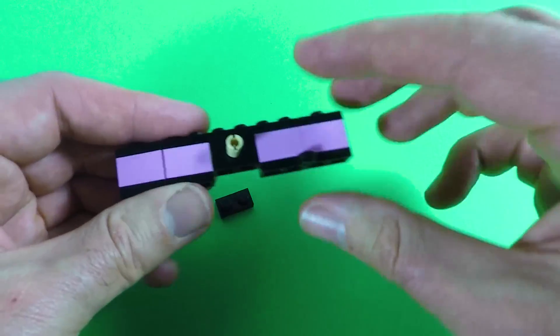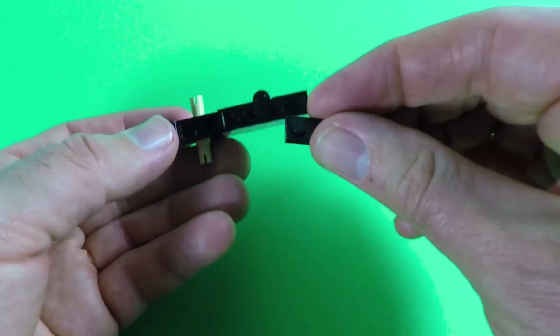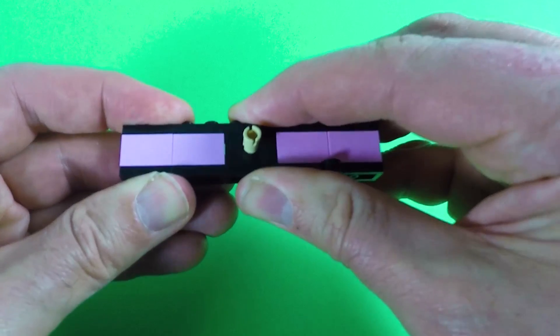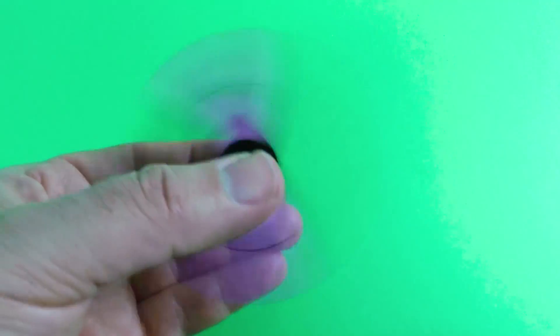So now we just need to finish off this little bit at the bottom and we'll just use the 2x1 plate. And there we go, our folding fidget spinner is finished. It was pretty easy, wasn't it?